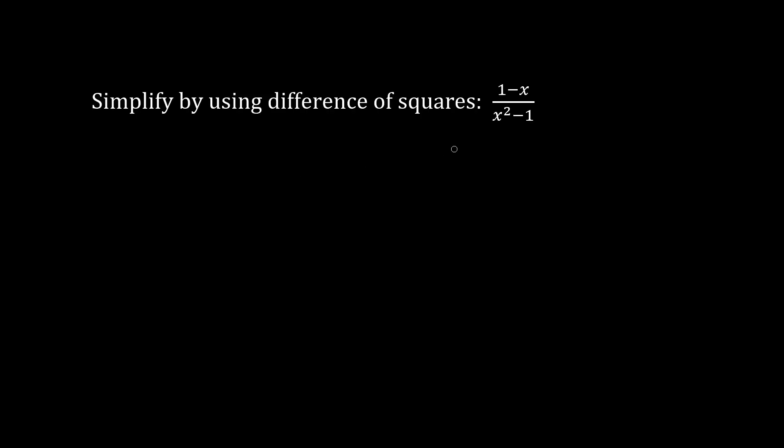Let's simplify this rational expression by factoring using difference of squares. We have the numerator 1 minus x. And we have the denominator. It factors as x times x is x squared. And we take the square root of 1, which is just 1. And we write plus and minus.